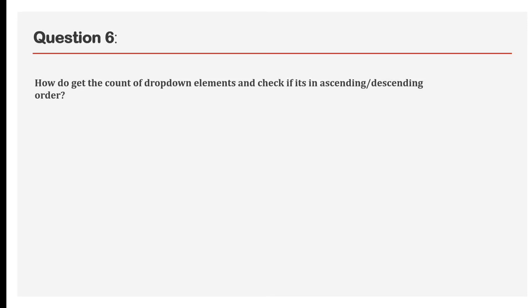For example, we have one dropdown available in a web page with some elements inside. We need to get the count of how many items are there, and then check whether they are in ascending or descending order. Let's quickly jump to Tosca.